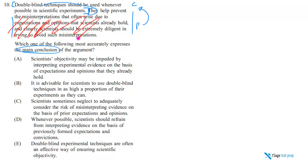When we do this, we just get sort of tunnel vision. Don't look at this stuff anymore. Just take a look at this sentence and paraphrase this sentence as best we can. Scientists' objectivity may be impeded by interpreting experiment evidence on the basis of—yeah great, that's what the premise says, not what the conclusion says.